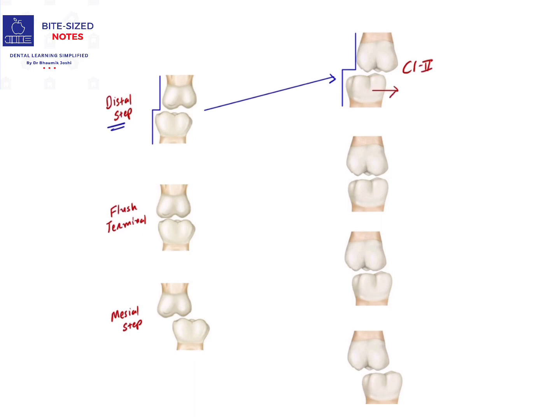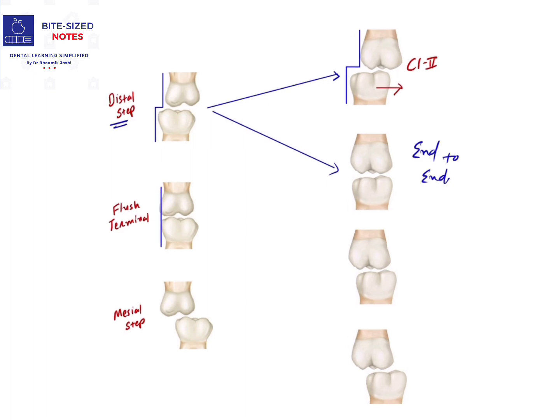Next is flush terminal plane, where both the distal surfaces of maxillary and mandibular second molars are in the same plane. When the permanent teeth erupt, they will erupt in the same manner only, that is end-to-end relationship.